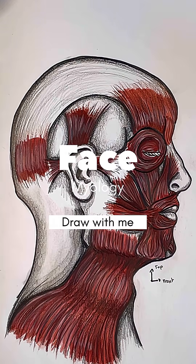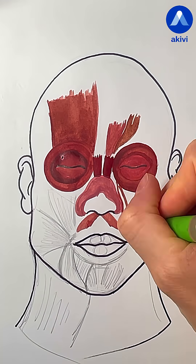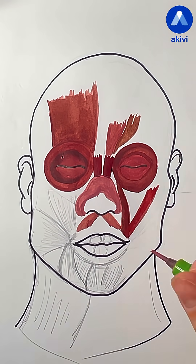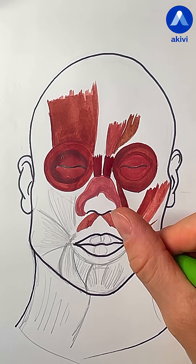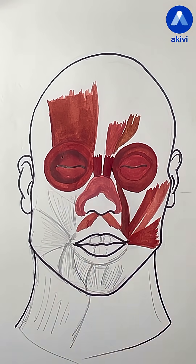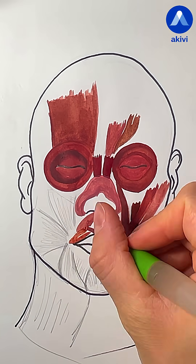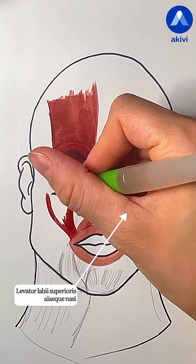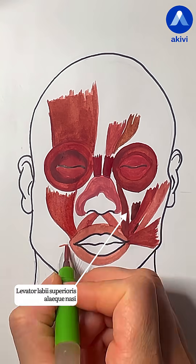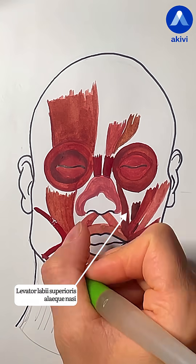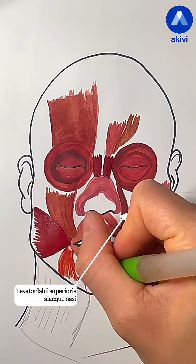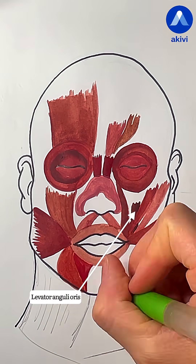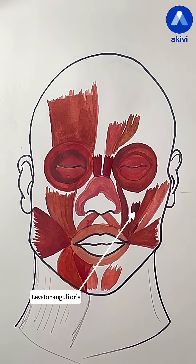Draw with me the muscles of the face. Let's move on to the muscles around the mouth and lips. We can divide them into two main groups: the dilators and the constrictors. First, the dilator muscles. We have the levator labii superioris alaeque nasi, which lifts both the upper lip and the side of the nose. Then the levator anguli oris, which raises the corner of the mouth.